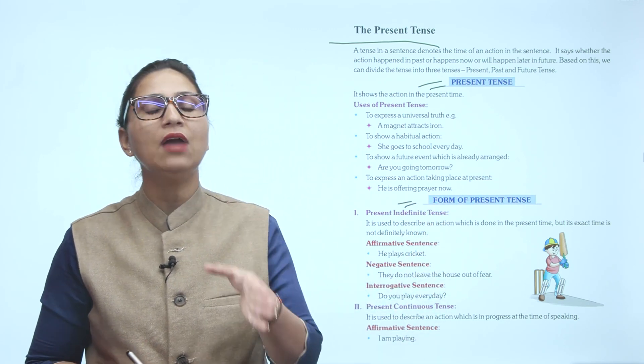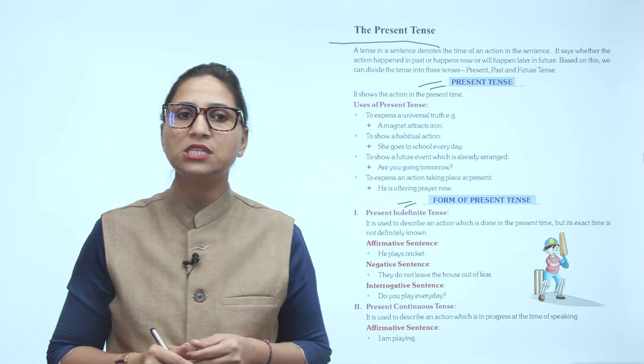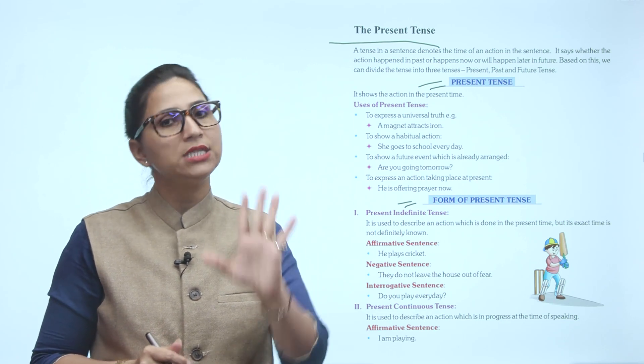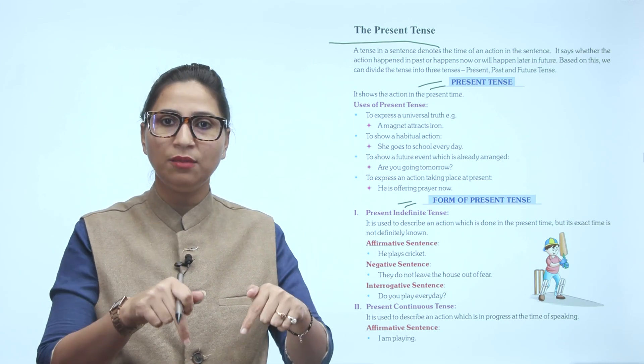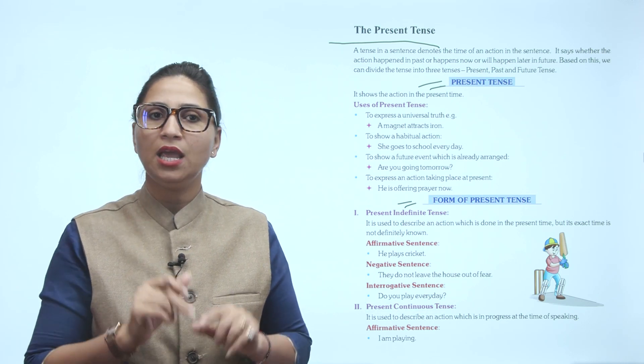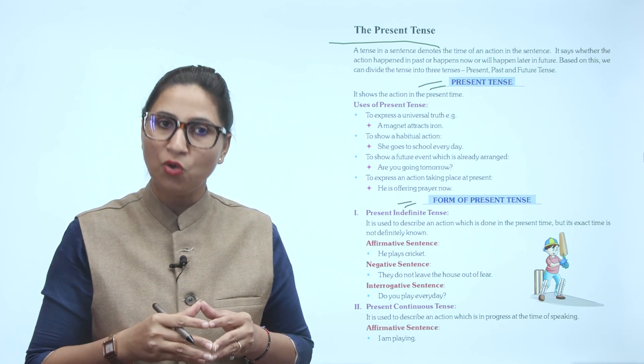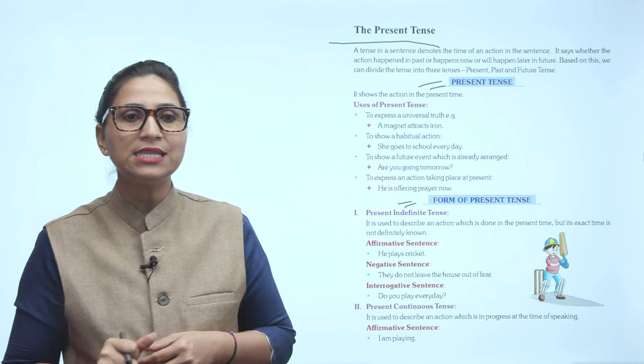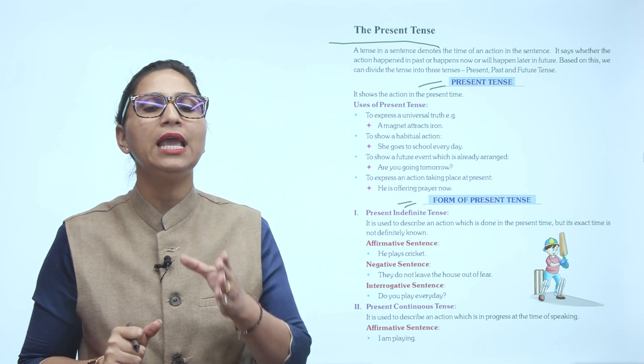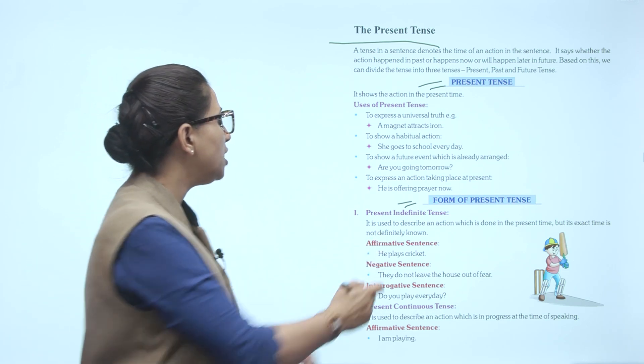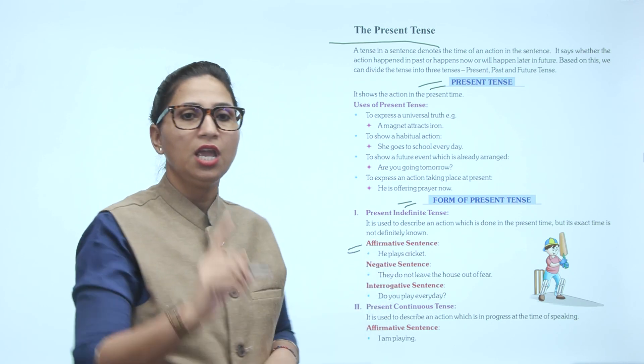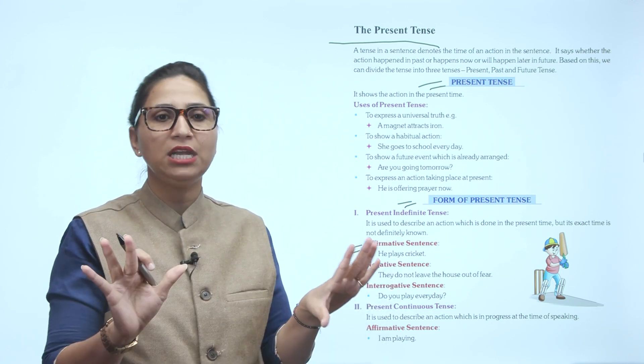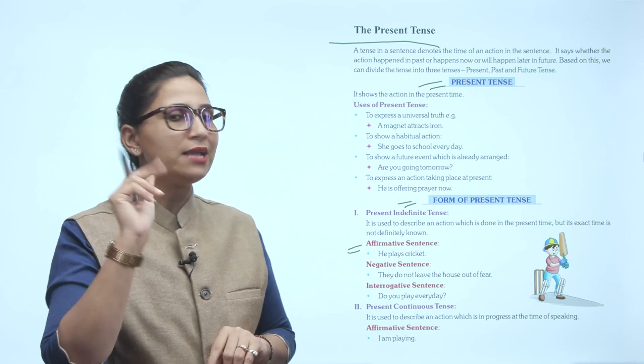So first, we will start from Present Indefinite Tense. It is used to describe an action which is done in present time, but its exact time is not definitely known. An affirmative sentence example: he plays cricket. This is a simple affirmative sentence.